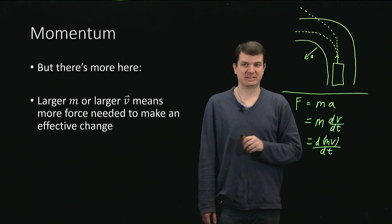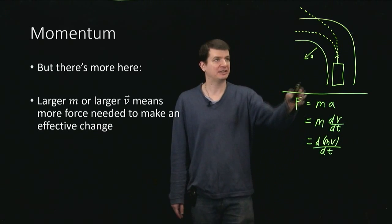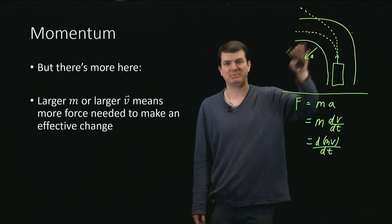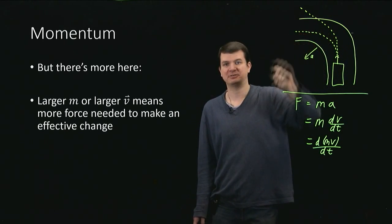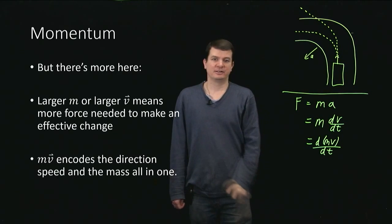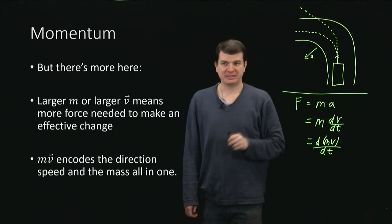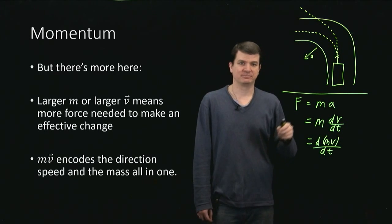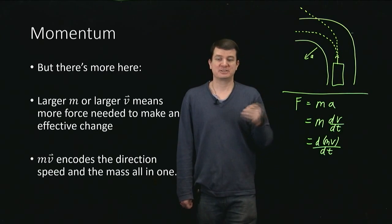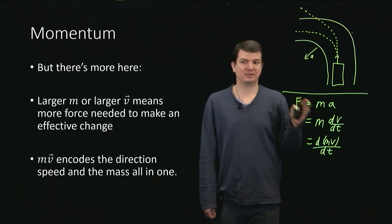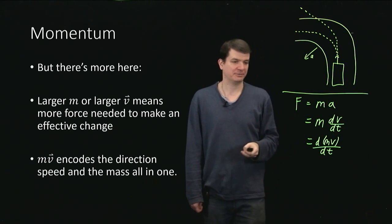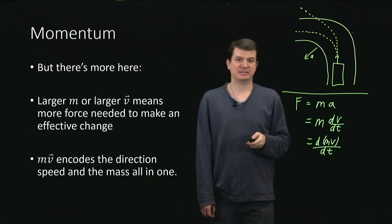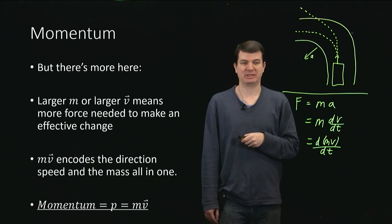Okay, so this is getting towards the right idea. The faster the car is moving, the larger the force had to be to make it actually follow the desired trajectory. So this m times v actually encodes the direction, if I make it a vector, the speed and the mass all in one quantity. And that is this all-important quantity of momentum.